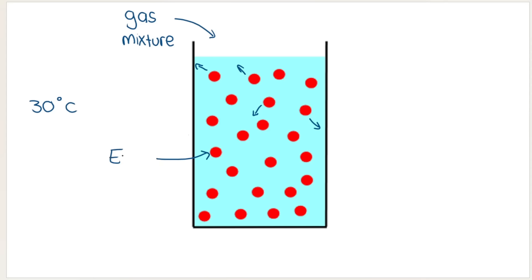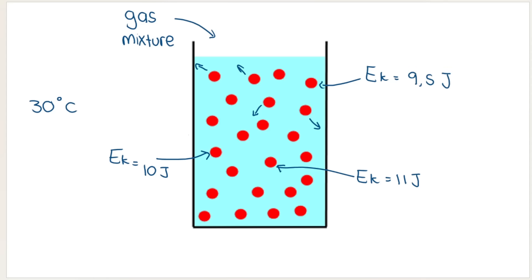This particle over here could have a kinetic energy of 10 joules, whereas this one could have a kinetic energy of 11 joules, and this one could have 9.5 joules. I just want you to understand that they move at slightly different speeds, which is associated with slightly different kinetic energies. The speed and kinetic energy of most of the particles lie in between — around the average kinetic energy of most particles.